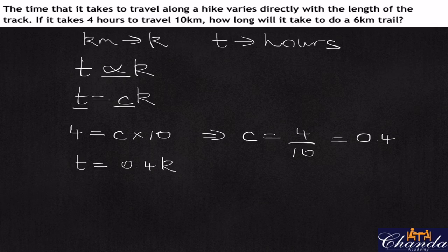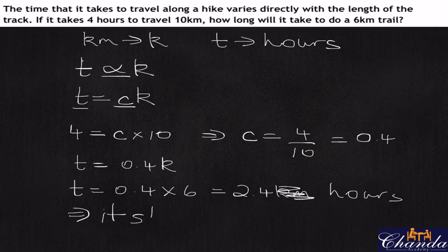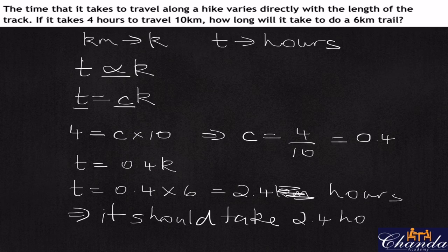We know that k is six kilometers for the second part. So t equals 0.4 times 6, which gives us 2.4 — that should be hours, not kilometers. Therefore it should take 2.4 hours.